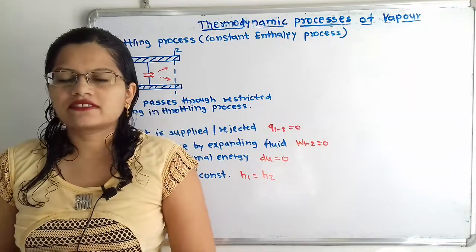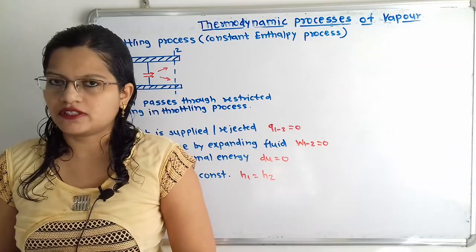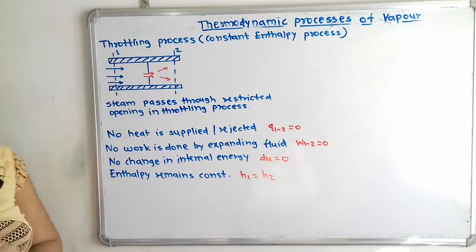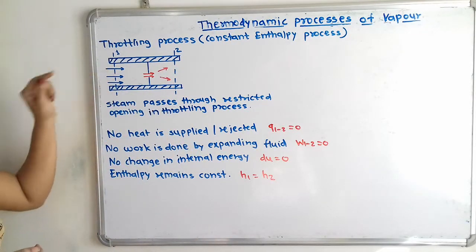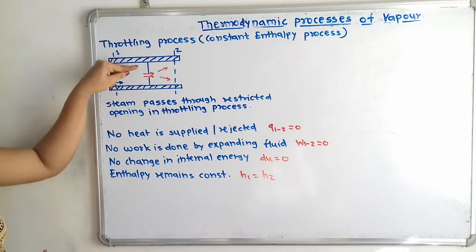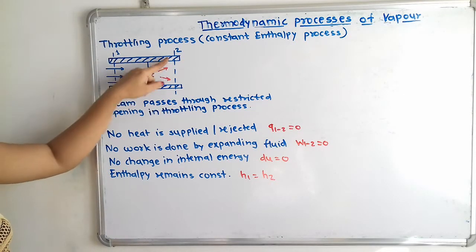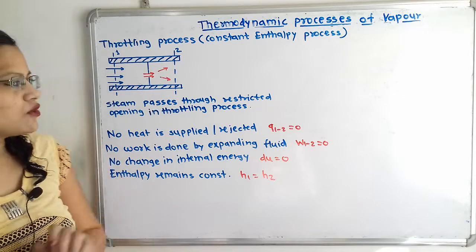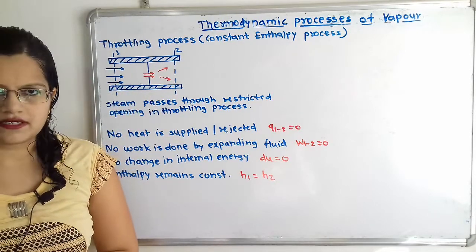It is also known as the constant enthalpy process. We will understand this with the help of a diagram. Here at point 1, there is the inlet of fluid. This fluid is passing through this narrow aperture, and at point 2, there is the outlet of fluid. So here throttling of steam is taking place.